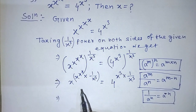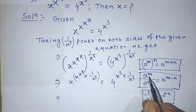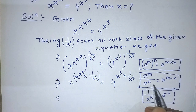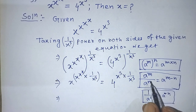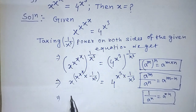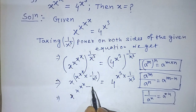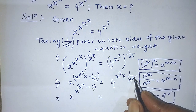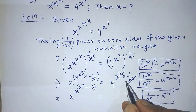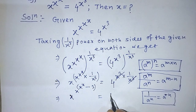To simplify the left hand side, we apply the formula a to the power m over a to the power n is equal to a to the power m minus n. According to this formula, we can write from the left hand side x raised to the power of x to the power of x to the power of x minus 3. On the right hand side, we can cancel x to the power 3 from numerator and denominator, so we get 4 to the power 1.